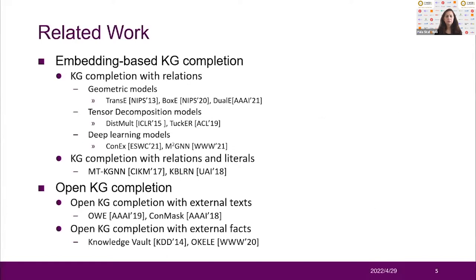I will briefly review existing representative KG compilation methods. There are mainly three types of embedding-based KG compilation methods for relation triples, including geometric models, tensor decomposition models, and deep learning models. These methods focus on completing missing edges between entities. Additionally, a few KG compilation methods, for example MT, KGN, and KBRN, are designed to complete literal triples.